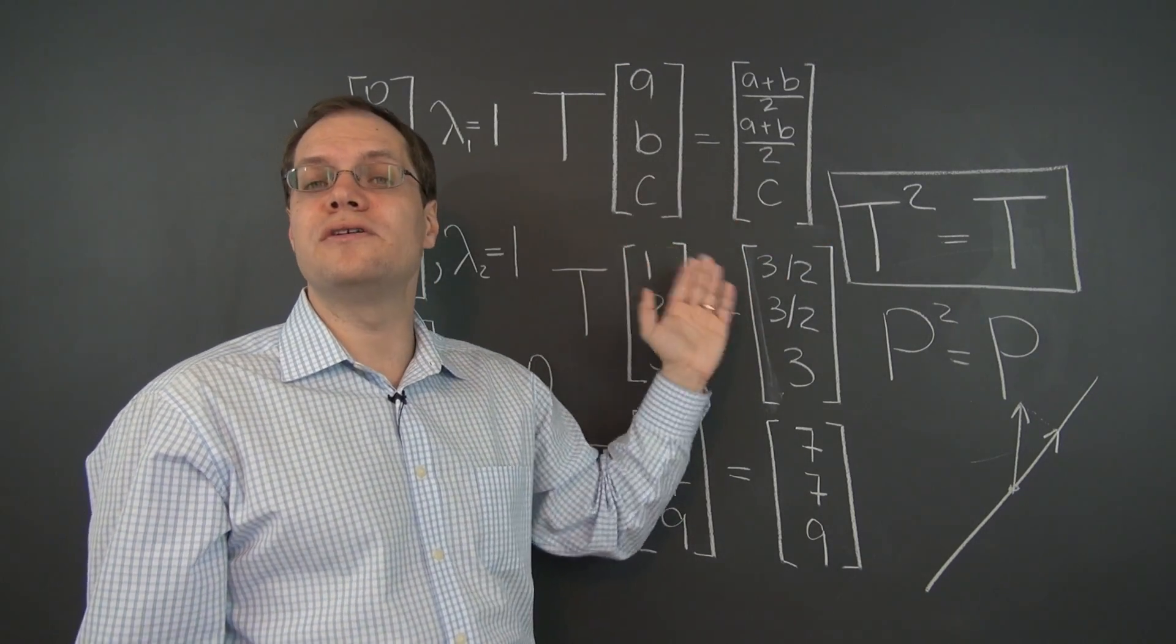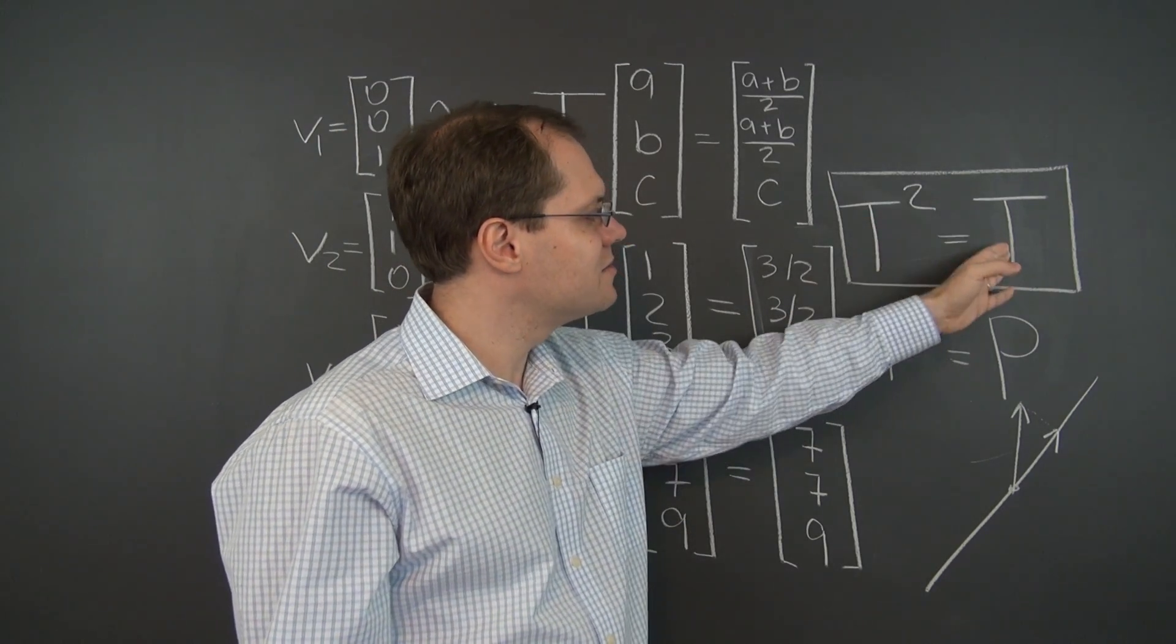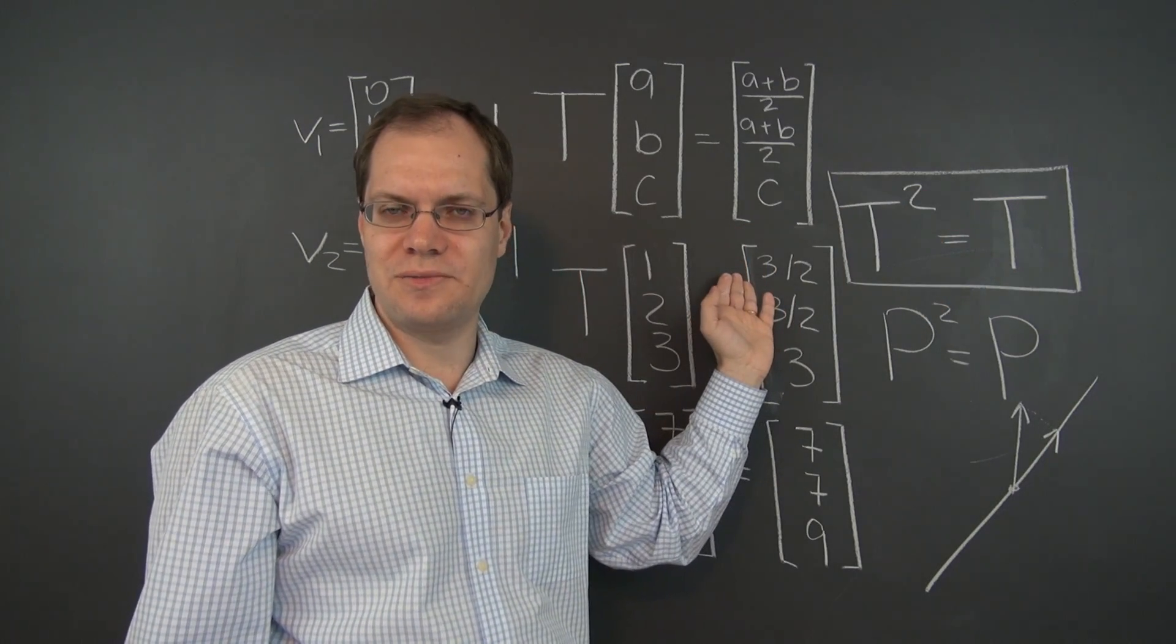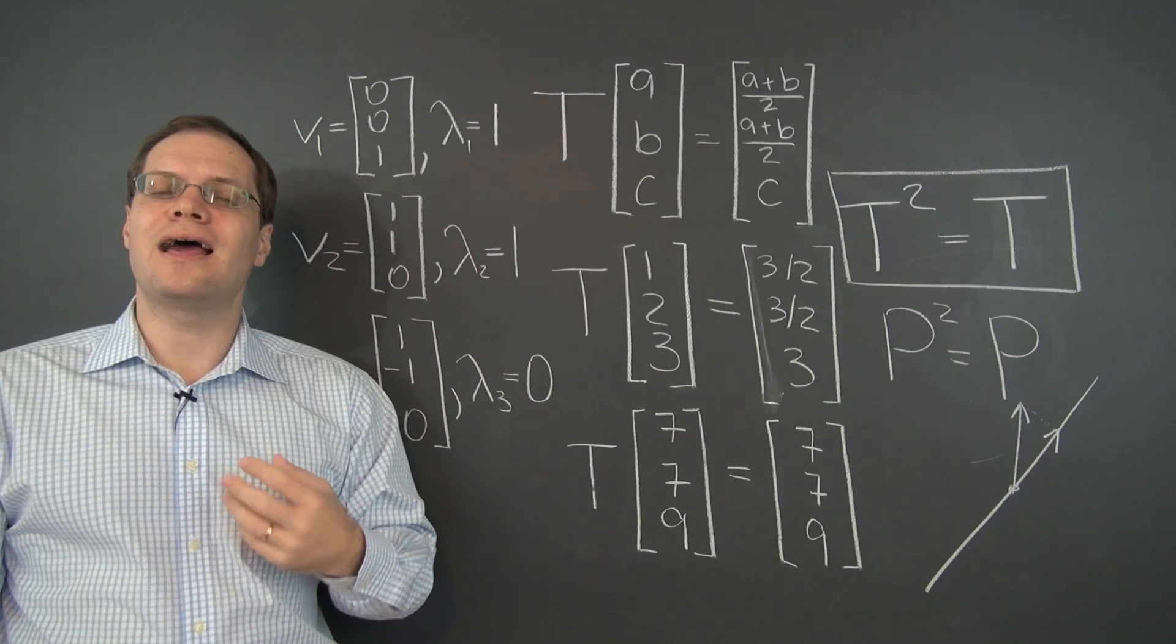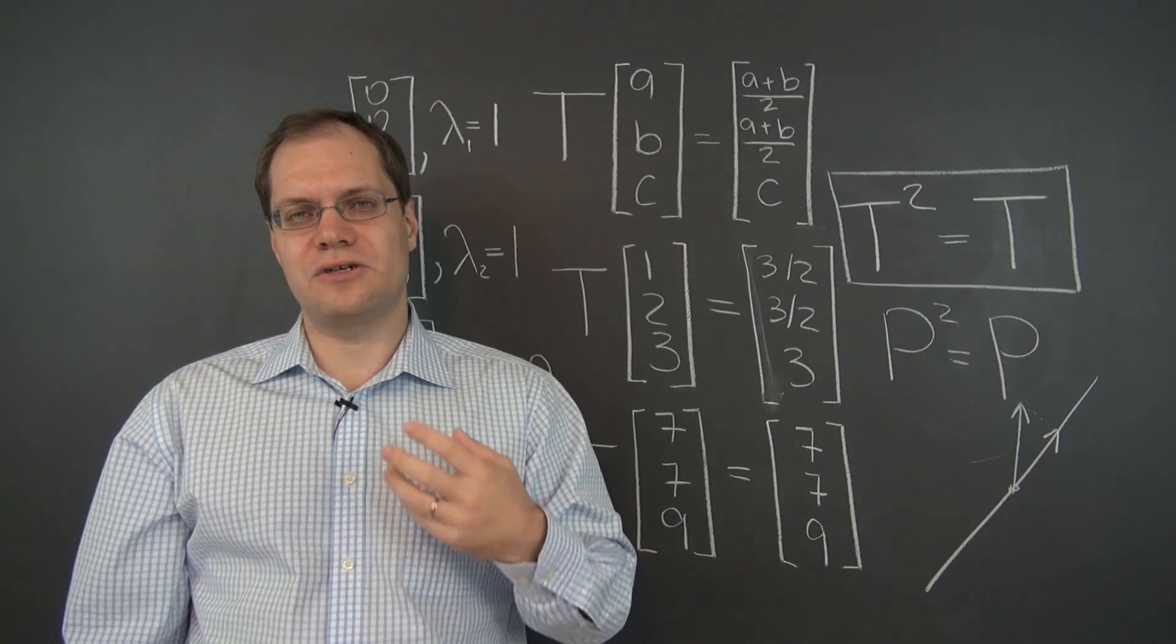So we would call this transformation a projection. And lo and behold that having this equation satisfied by our linear transformation corresponds to the eigenvalues being all 0's and 1's. Just like in the case of a geometric projection.